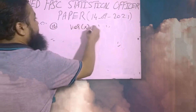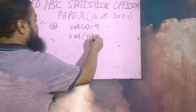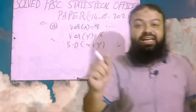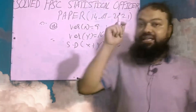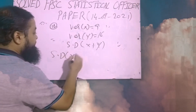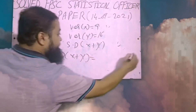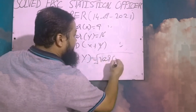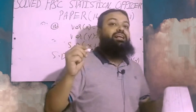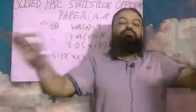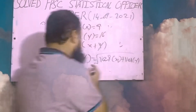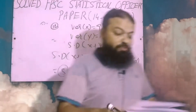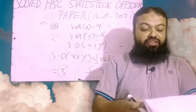Question number twelve: if variance of x is 9 and variance of y is 16, and x and y are two independent variables, find the standard deviation of (x + y). The formula is: SD(x+y) = √(Var(x) + Var(y)). When x and y are independent, there is no covariance term. So √(9 + 16) = √25 = 5 is the correct option.